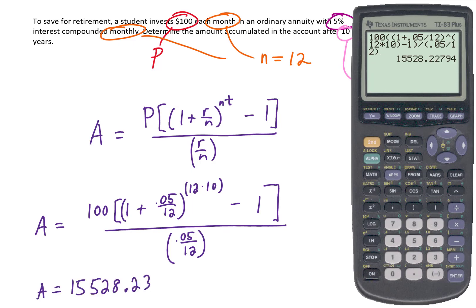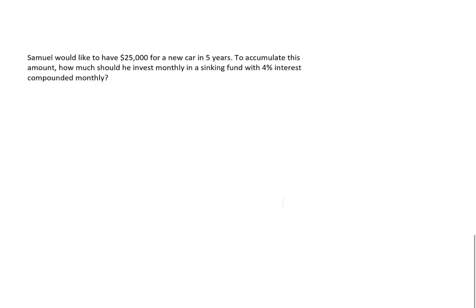It looks like by saving $100 a month for 10 years with 5% interest, you end up with $15,528 and 23 cents in this account. Well, I think that that's pretty good. So I'm going to box that thing up and we can take a look at the next problem.